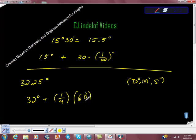So 1 fourth times 60 is 60 over 4 is equal to 15. So we get... Sorry. Let me do that this way. We get 32 degrees, 15 minutes.